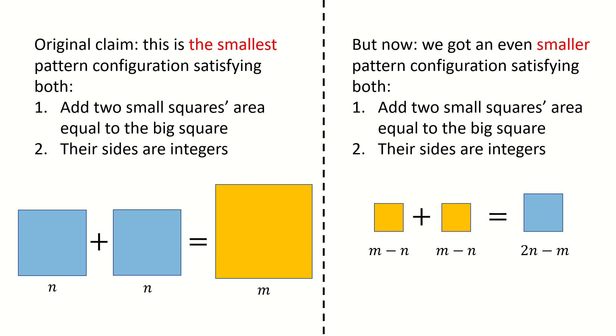But now we got an even smaller pattern configuration satisfying both conditions. So that means the original claim is not the smallest one. So we got a contradiction.